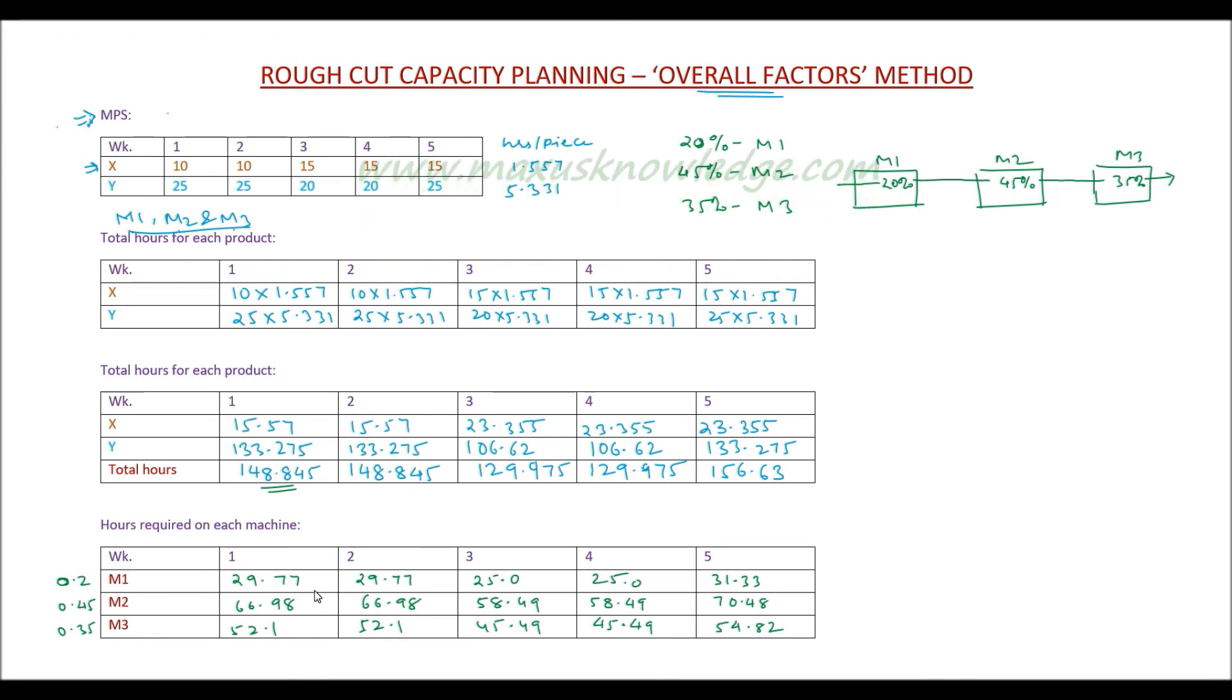At this point, clearly there are decisions that should be made. Now let's take M1. M1 is required for 29.77 hours in week 1. Now let's say the capacity available is 40 hours—so this is being under-utilized by around 10 hours.